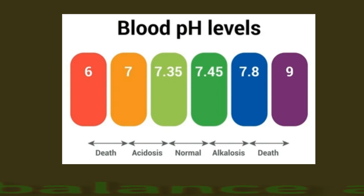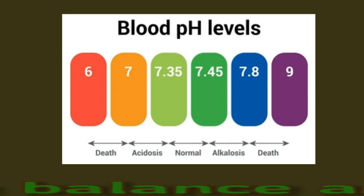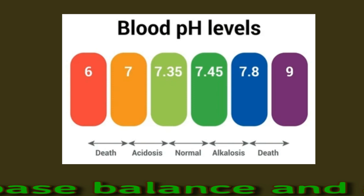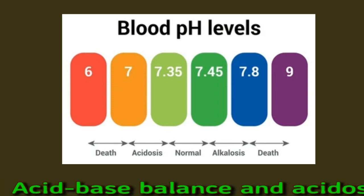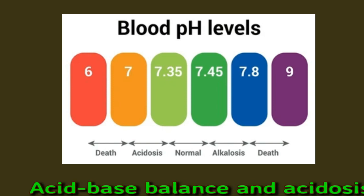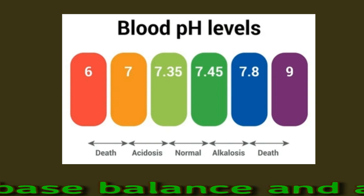Acid-base balance and acidosis: when acid levels in the body are in balance with the base levels, the potential hydrogen, or pH, of blood is around 7.4. A lower pH number reflects higher levels of acid, and a higher pH number represents higher base levels. The narrow pH range of expected function is between 7.35 and 7.45.